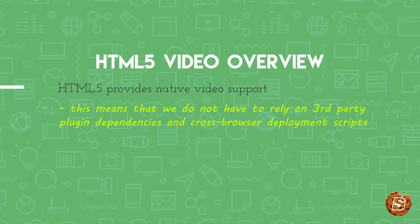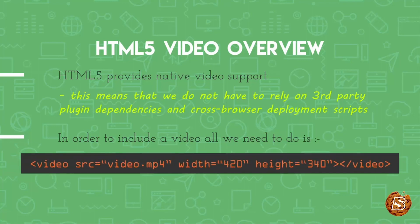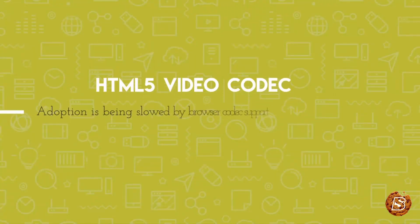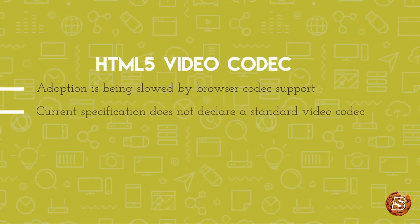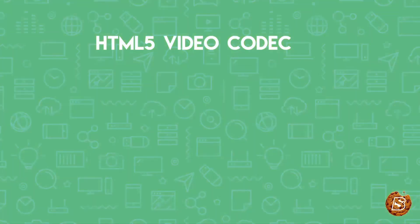In order to include a video, all we need to do is make use of the video tag with the src attribute pointing to a video file, then specify the width and height. But there are certain issues with it — that option is being slowed by browser codec support. The current specification does not declare a standard video codec, and because of the unclear nature of patents and licensing, it's affecting browser support.